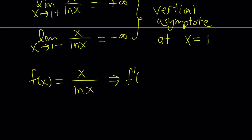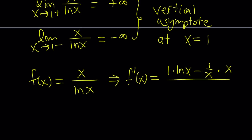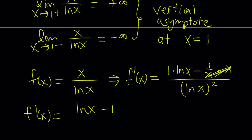Using the quotient rule: the derivative of the top is 1 times the bottom, minus the derivative of the bottom which is 1 over x times the top x, all divided by the bottom expression squared. The x cancels out, leaving us with f prime equals ln x minus 1, divided by ln x quantity squared.